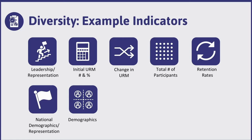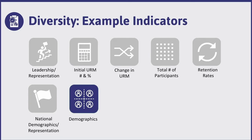Some example indicators for diversity include looking at the diversity of leadership or the representation of those in the program or project, calculating initial underrepresented minority numbers and percentages, tracking change in underrepresented minority participation, looking at the total number of participants, looking at retention rates and disaggregating them by various demographics, and comparing national demographics and representation of participants. One of the key indicators for diversity is demographics.